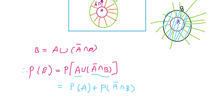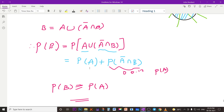So if we add P of A-bar intersection B — which is 0 or greater than 0 — to P of A, the result P of B is greater than or equal to P of A. Therefore, P of A is less than or equal to P of B.